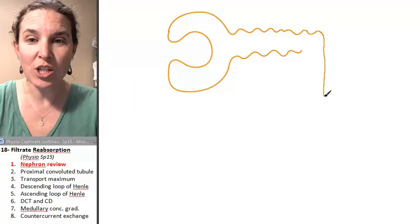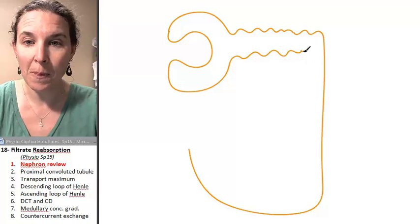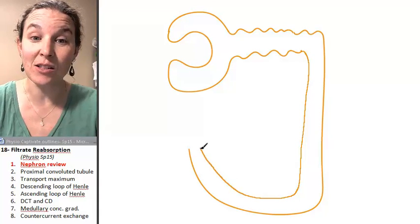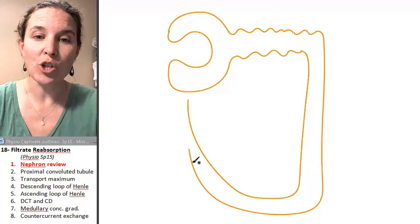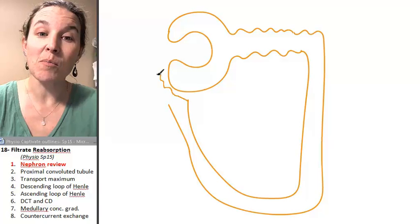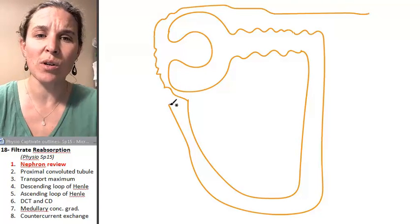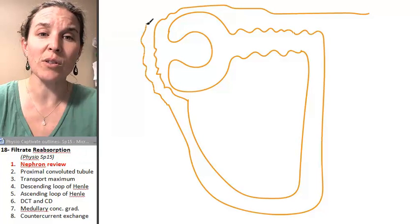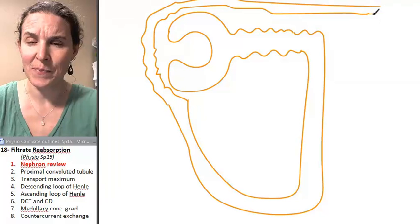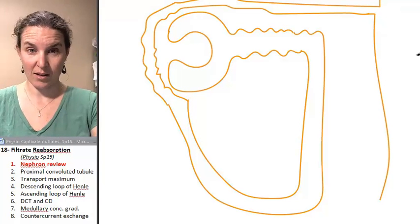The proximal convoluted tubule descends down into the descending loop of Henle, which then turns into the ascending loop of Henle, which travels up by the Bowman's capsule all over again and into the distal convoluted tubule, where it dumps into the collecting duct.